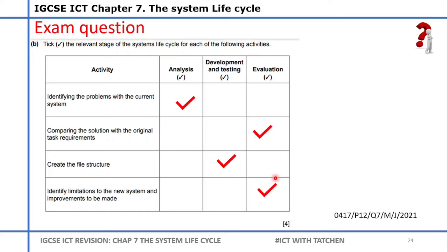Another question asks you to state the relevant stage of the system life cycle for each activity. Identifying the problems with the current system — that is the analysis stage. Comparing the solution with the original task requirements — that is the evaluation stage. Creating the file structure — that is the development stage. Identifying the limitations in the new system and improvements to be made — that is the evaluation stage. Be careful not to confuse this with analysis: you identify the new system's limitations at evaluation, whereas the old system's issues go to analysis.